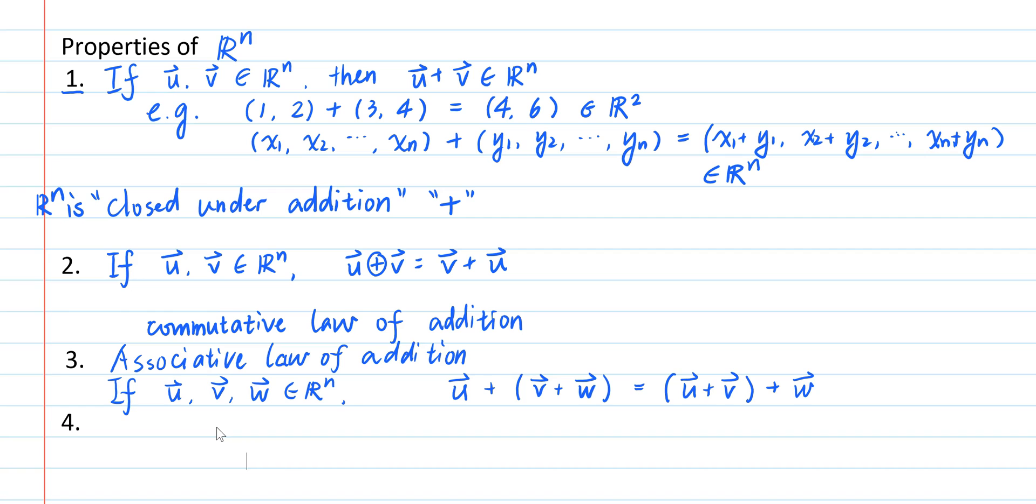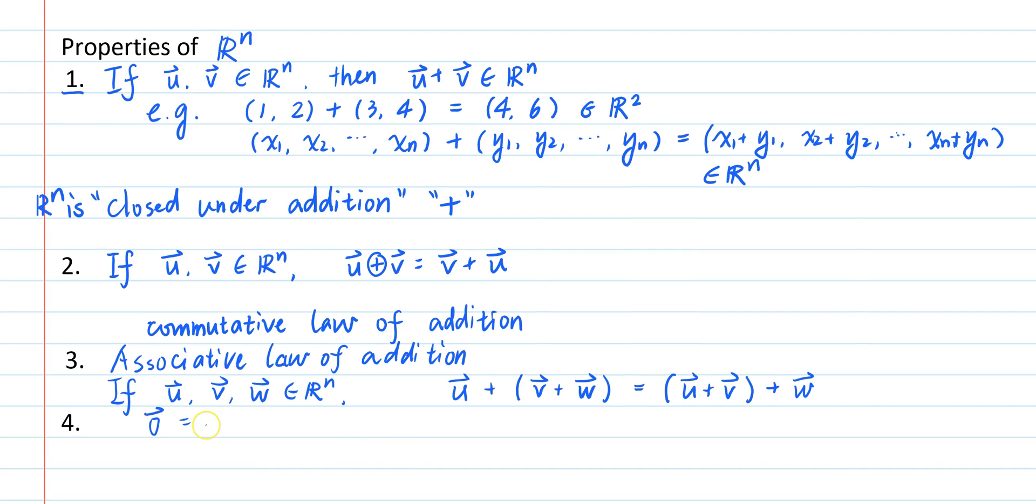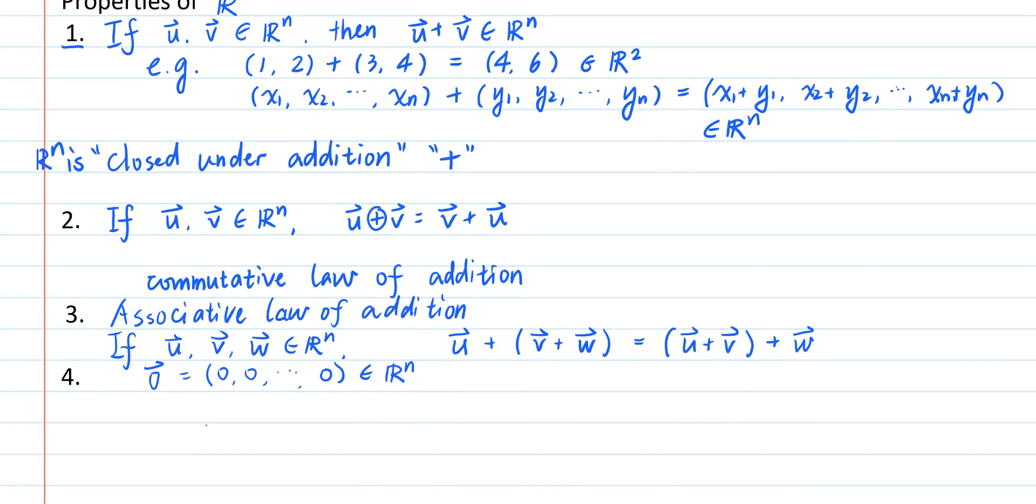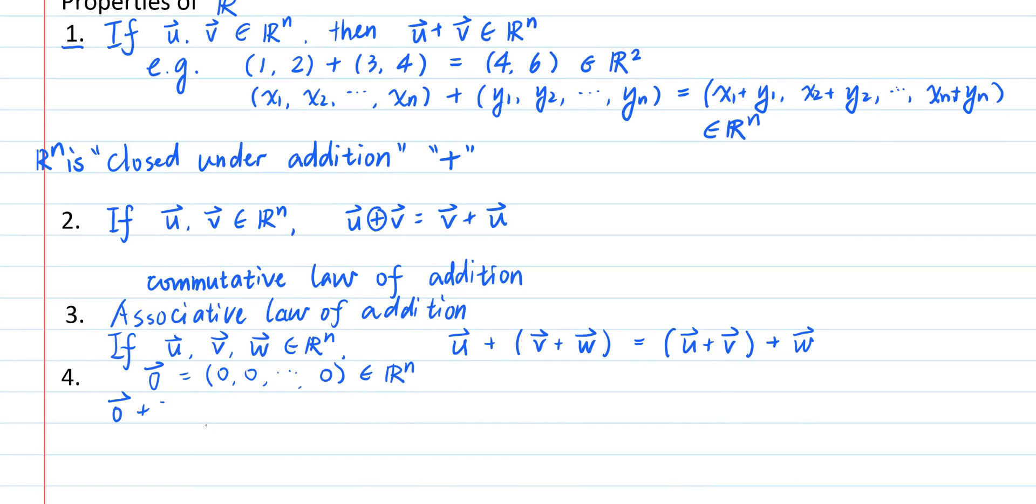The fourth property is that there exists a zero vector in R^n, which is the n-tuple of zeros, so that under the definition of addition, the sum of zero and any other vector in R^n is equal to that vector itself.